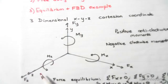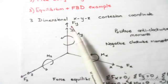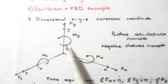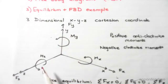So as you can see, the x-axis has a moment about the x-axis and the force about the x-axis over here. The y-axis has a force about the y-axis and a moment about the y-axis over here, as you can see. And finally, the z-axis has a force about the z-axis and a moment about the z-axis.